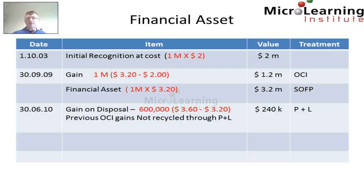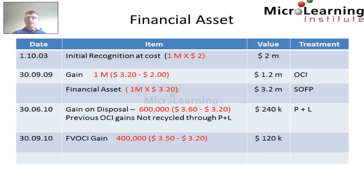It's also important to note that any previous other comprehensive income gains — so this would refer to the $1.2 million of gains previously recognized in other comprehensive income — these gains are not recycled to the profit and loss in line with IFRS 9. Between the 30th of June 2010 and the 30th of September 2010, there is a further gain in the share price from $3.20 to $3.50. We have 400,000 shares that experienced that gain, so we have another fair value gain of $120,000, which is once again taken to other comprehensive income in our income statement.